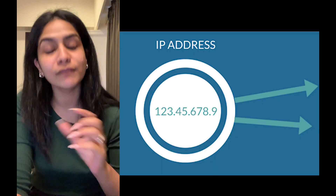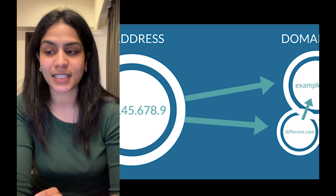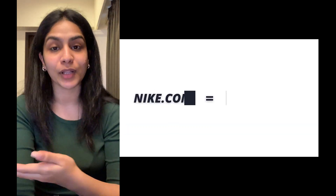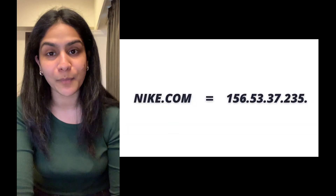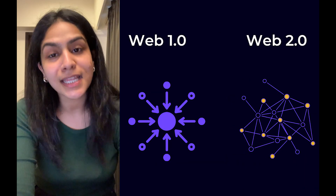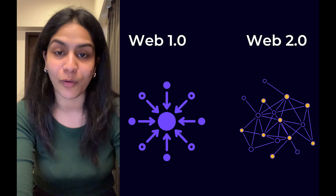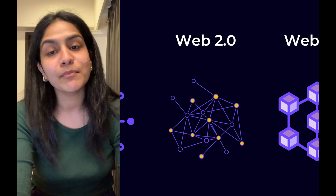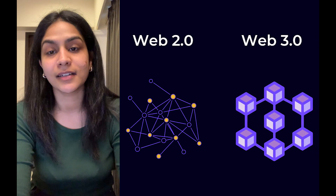DNS — Domain Name Service — allowed websites that we are familiar with today to convert their IP addresses into readable text. For example, nike.com is actually 156.53.37.235. As the internet continues to evolve into Web 3.0, it is important to consider what the future of the internet will look like.